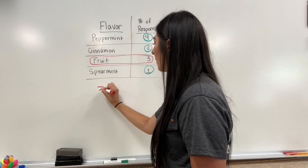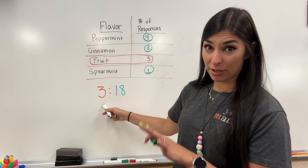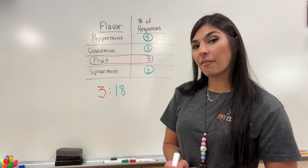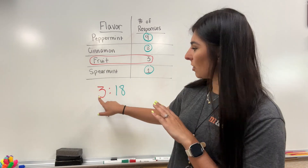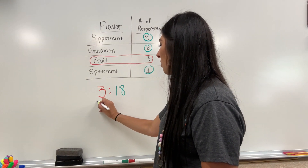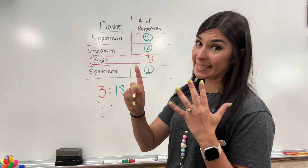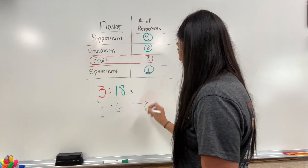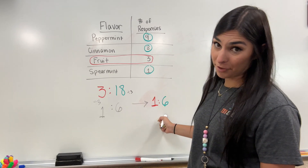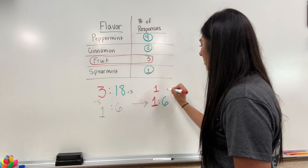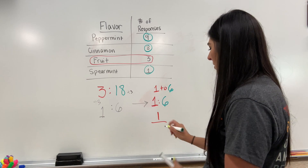For peppermint I had nine, cinnamon we had eight, fruit there was three, and spearmint there was one. Fruit — I know I have three. Let's add up the rest: nine and one is a quick 10, plus that eight, that's going to be 18. So for every three students who preferred fruit, we had 18 students that did not want fruit. Can this be simplified? Yes, because the greatest common factor — the greatest number that both of these have in common — is three. Three goes into three one time, and three goes into 18 six times. So our actual ratio would be one fruit gum lover to every six non-fruit gum lovers. I could also write this as one to six, or as a fraction, one over six.